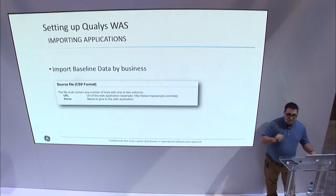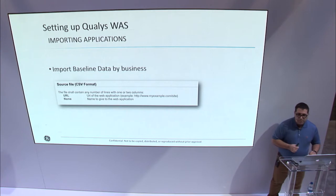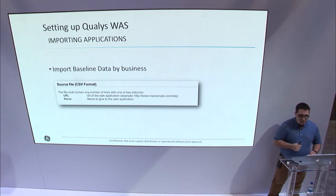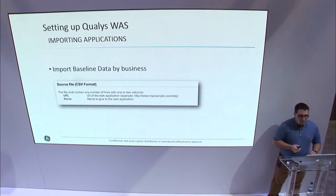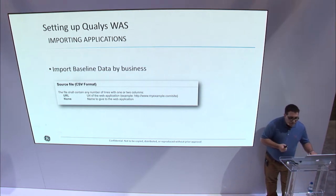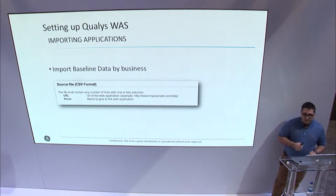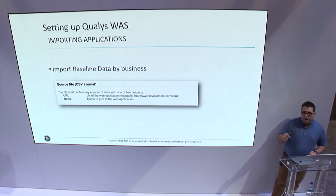This gives us traceability back to our application repository. There are other benefits to using the application name as well, because when sending out a report, we can include the name and not the URL, which is more obscure as we send reports internally. Another nice feature during import is that Qualys WAAS detects duplicate applications by name, so we're actually able to upload our applications and Qualys will do the heavy lifting and deduplicate the list for us.